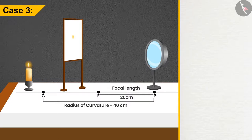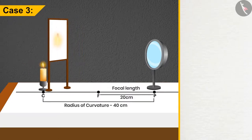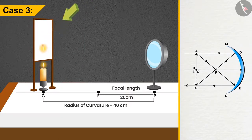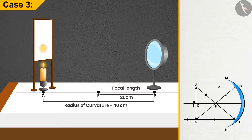Case 3: If the candle is placed at C, then the image will also be formed at C. The size of the image will be the same as the candle, but the nature will be real and inverted.